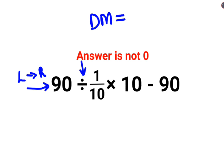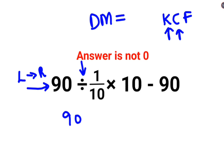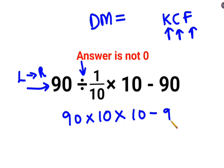So first there is division. Whenever you have division between two numbers and either of them involves a fraction, you need to follow the rule of KCF — where K stands for keeping the first number as it is, C stands for changing the division sign to multiplication, and F stands for flipping, or taking the reciprocal of 1 upon 10, which gives you 10, multiplied by 10, minus 90.